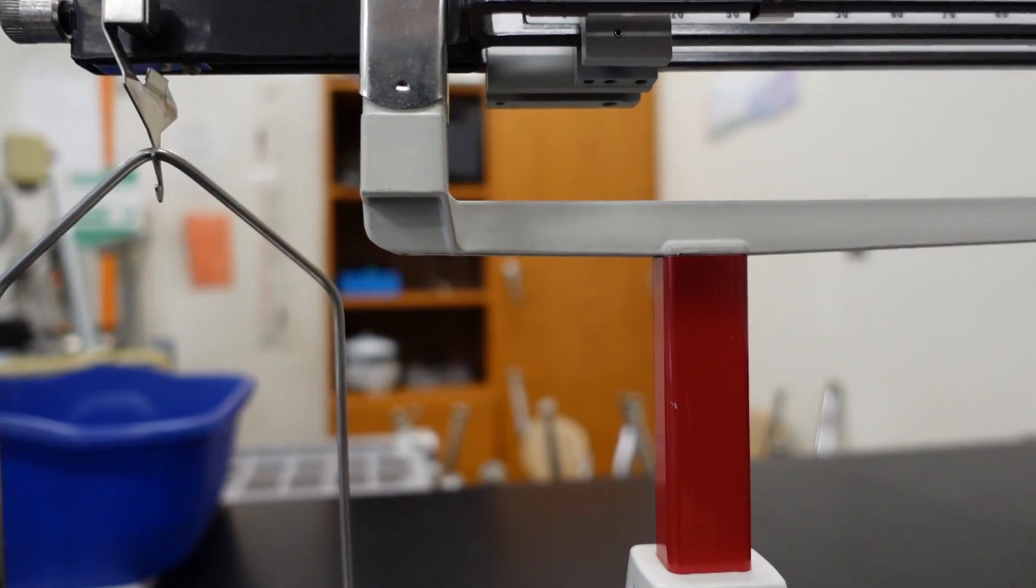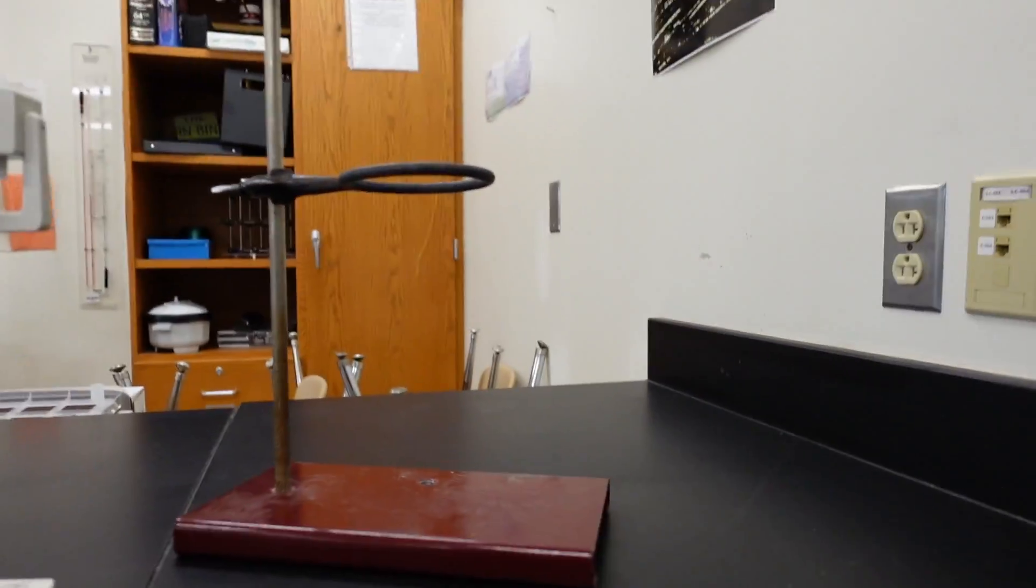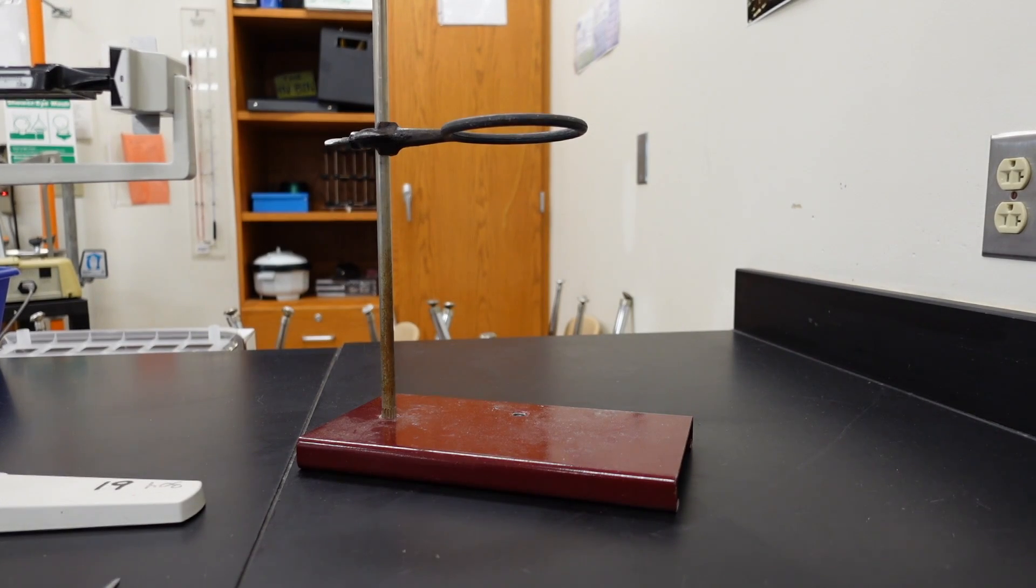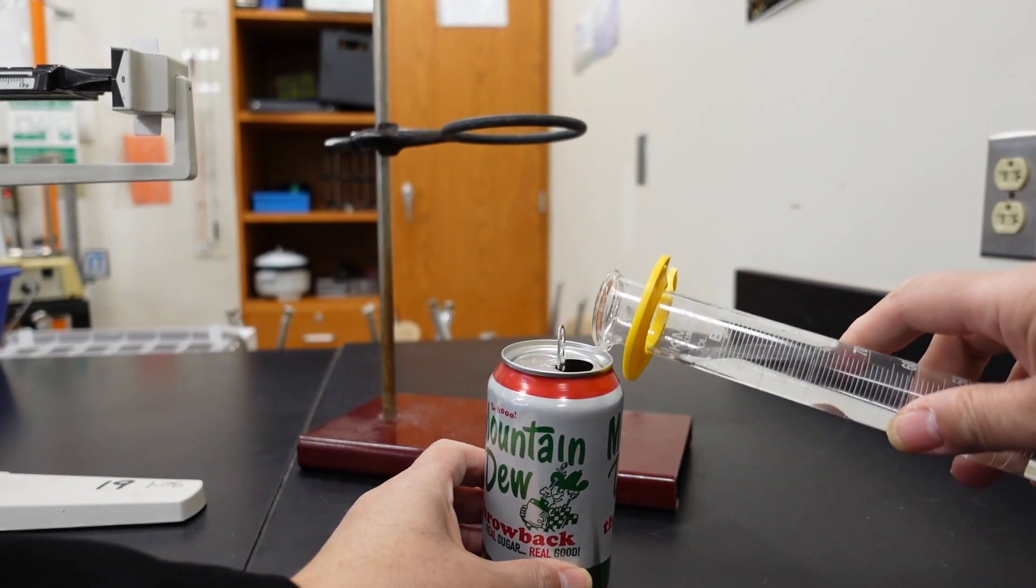All right, so that's the mass of the candle before we burn it. So now we're going to have to burn it. So let's have a look at what comes next. Let's get ready. We have a ring stand with a ring.